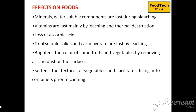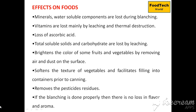Blanching softens the texture of vegetables and facilitates filling into containers before canning. It also removes pesticide residues from the surfaces of fruits and vegetables. If blanching is done properly, there is no loss in flavor and aroma.